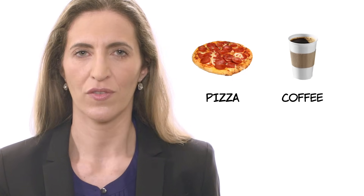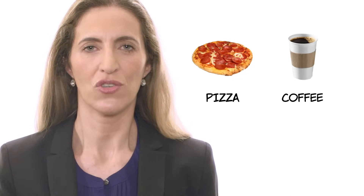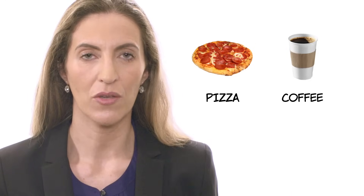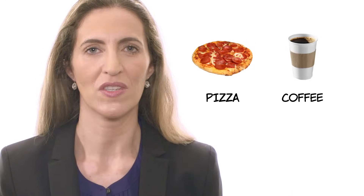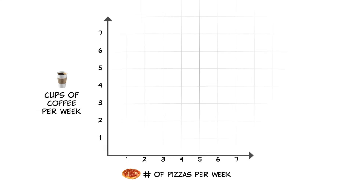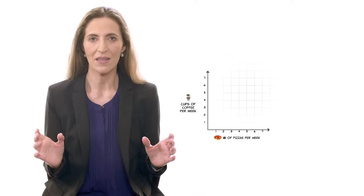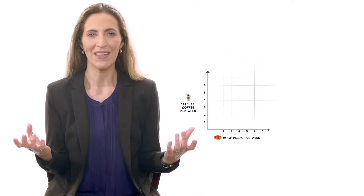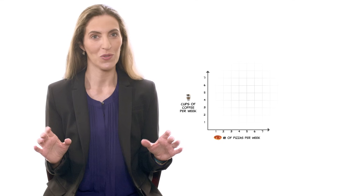Suppose I asked you which of the following combinations you would rather have — this is like asking you to rank them in order of preference. Let's plot them on a graph. On the x-axis we have the number of pizzas per week, and on the y-axis we have cups of coffee per week. Because we view pizza and coffee as good things, things that bring us utility, we always want more of them.